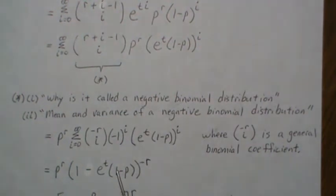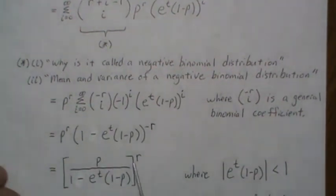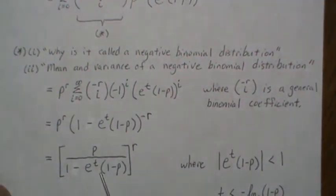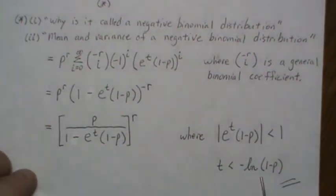So now this negative R, this piece can be taken down below and since both are raised to the R then we get this and this is the moment generating function for a negative binomial. Now one of the assumptions on this conversion is that this piece is less than 1 which then implies that t is less than this. So that requirement has to be met.